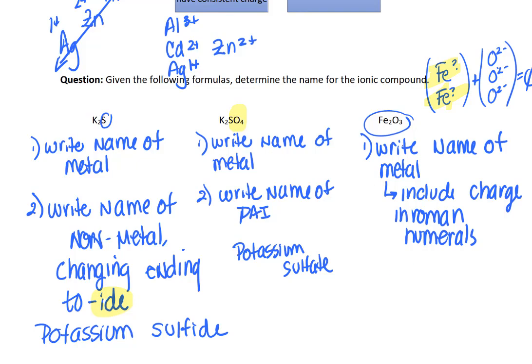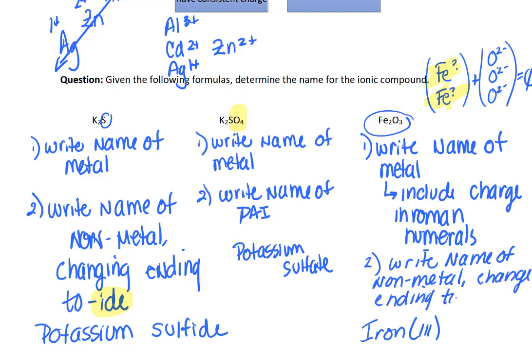So after you write down iron three, then you end with write the name of the nonmetal, changing the ending to ide. So oxide.